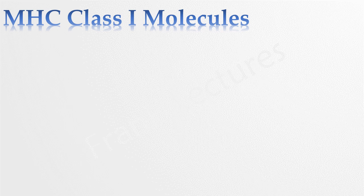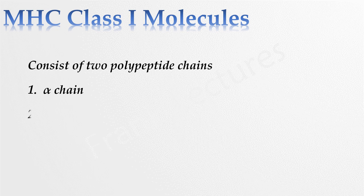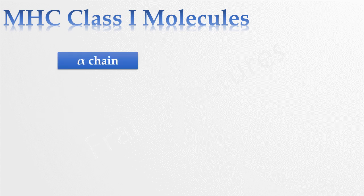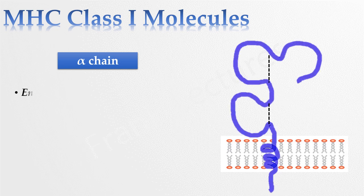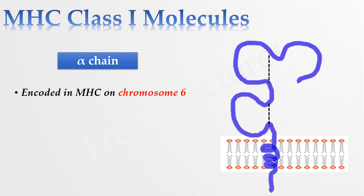Class 1 molecule consists of two polypeptide chains: Alpha chain and beta-2-microglobulin. Alpha chain is encoded in the major histocompatibility complex, that is on chromosome 6 in humans. It has a molecular weight of 45 kD.